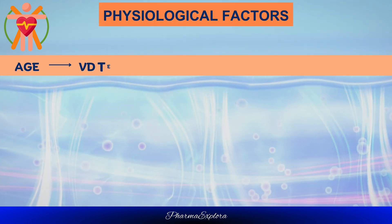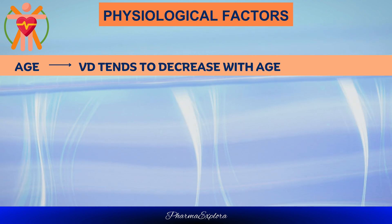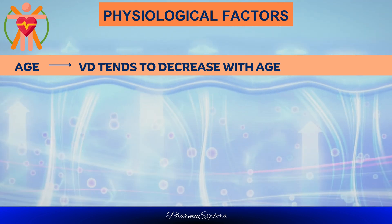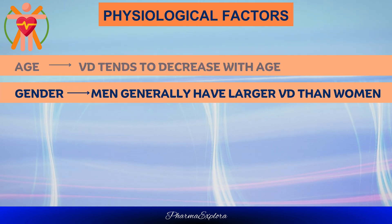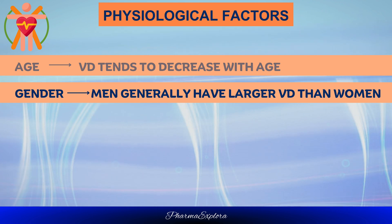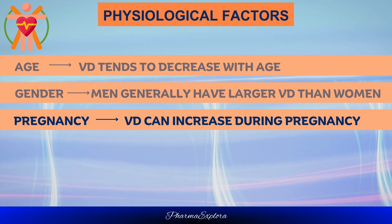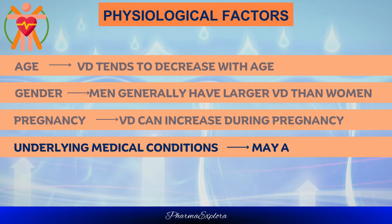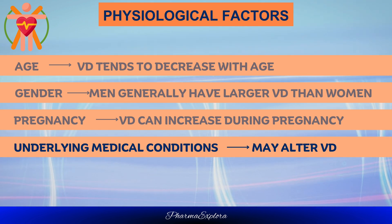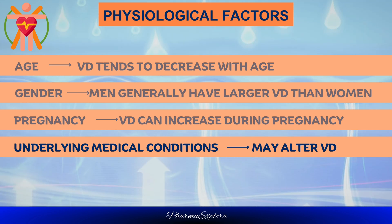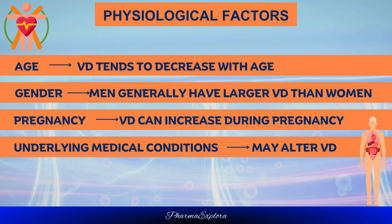Physiological factors affecting volume of distribution include: (1) Age — Vd tends to decrease with age due to loss of muscle mass and increased adipose tissue; (2) Gender — men generally have a larger Vd than women due to higher muscle mass; (3) Pregnancy — Vd can increase during pregnancy due to hormonal changes and fluid shifts; and (4) Underlying medical conditions — such as liver or kidney disease, which can alter the Vd of drugs.